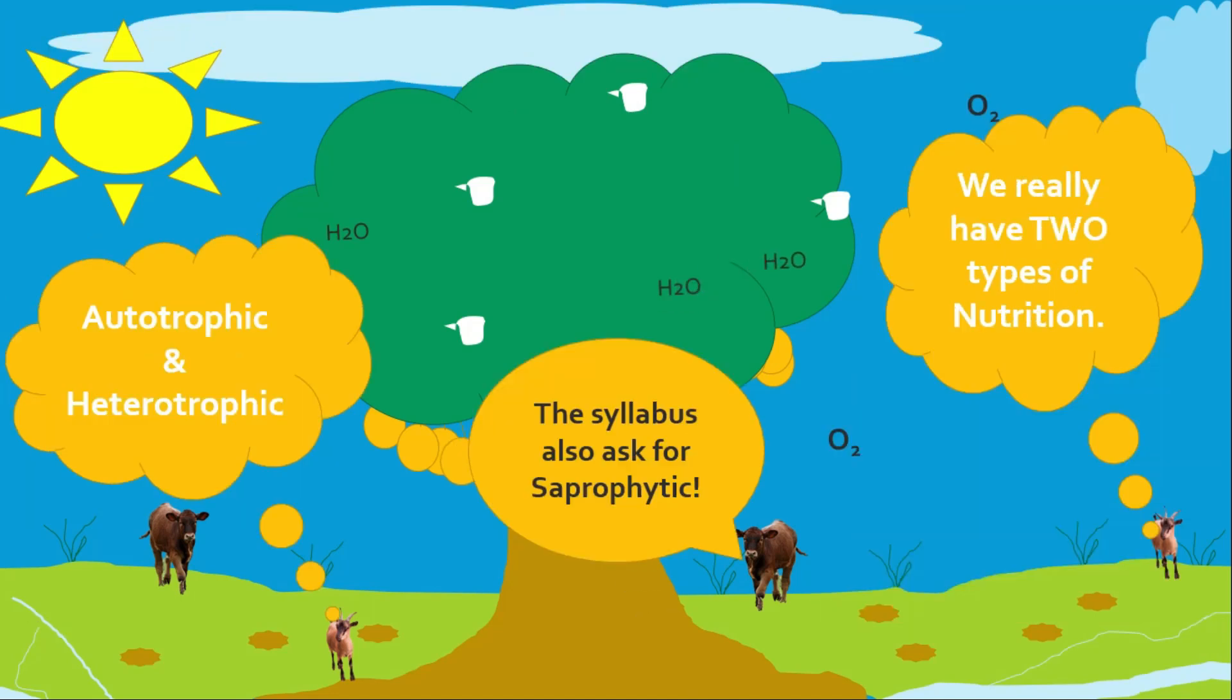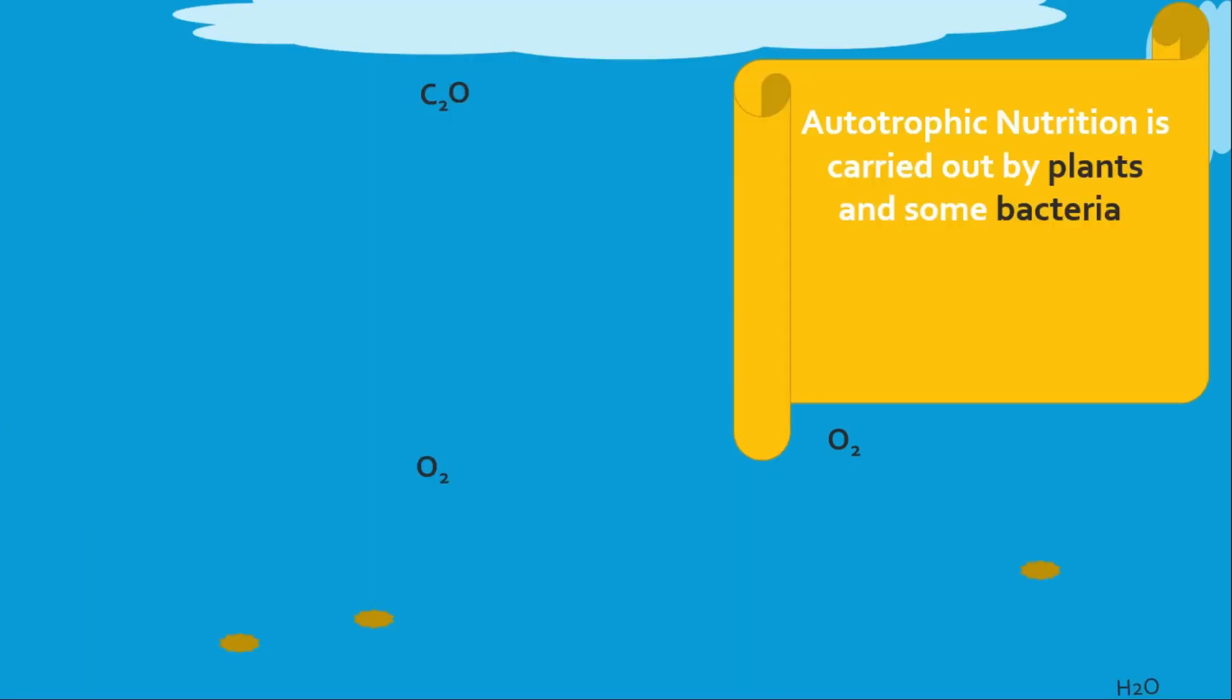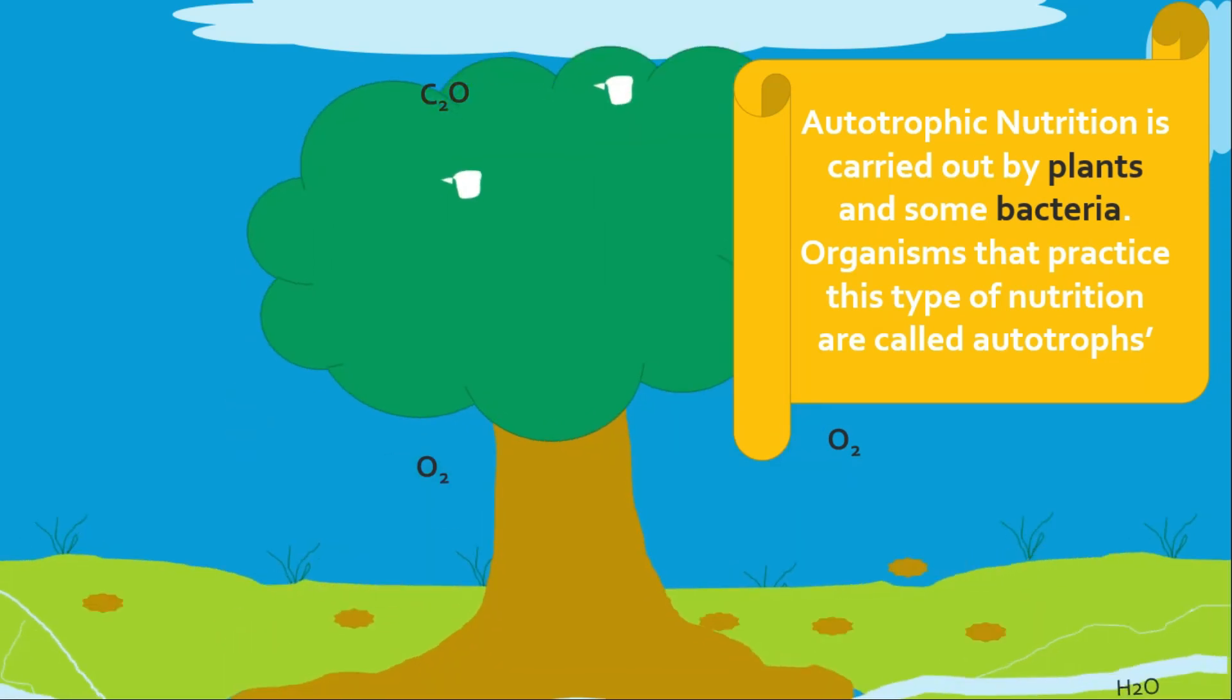We really have two types of nutrition: autotrophic and heterotrophic. The syllabus also asks for saprophytic, which we will cover in this series. Autotrophic nutrition is carried out by plants and some bacteria. Organisms that practice this type of nutrition are called autotrophs.